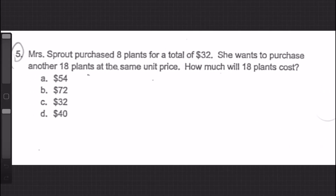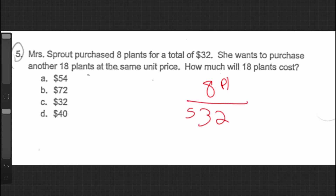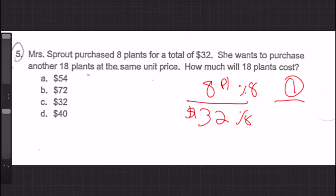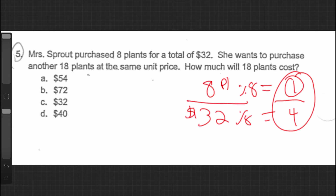Question five. Mrs. Sprout purchased eight plants for a total of $32. She wants to purchase another 18 plants at the same unit price. How much will she pay for 18 plants? We set up our ratio: eight plants for $32. To find the price per one plant, divide both numbers by eight. Eight divided by eight is one, and 32 divided by eight is four. That gives us $4 per plant.